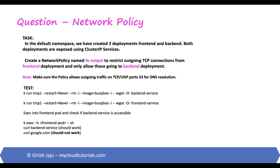Let's take a look at the question. In the default namespace, we have created two deployments: frontend and backend. Both deployments are exposed using ClusterIP services. Create a network policy named fe-netpol to restrict outgoing TCP connections from the frontend deployment and only allow those going to the backend deployment. Make sure the policy allows outgoing traffic on TCP and UDP port 53 for DNS resolution.